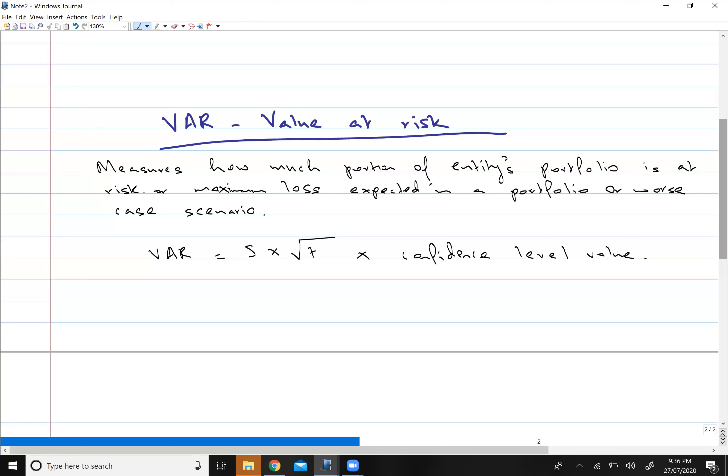Similarly, if your answer from VAR is 0.2, it means if I invest one dollar, the maximum loss that I can suffer on my investment is 20 pence.